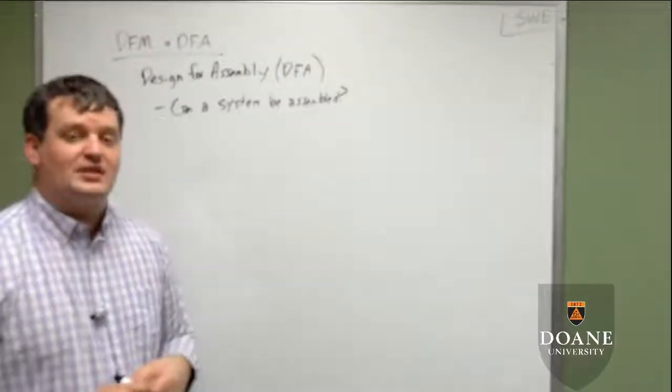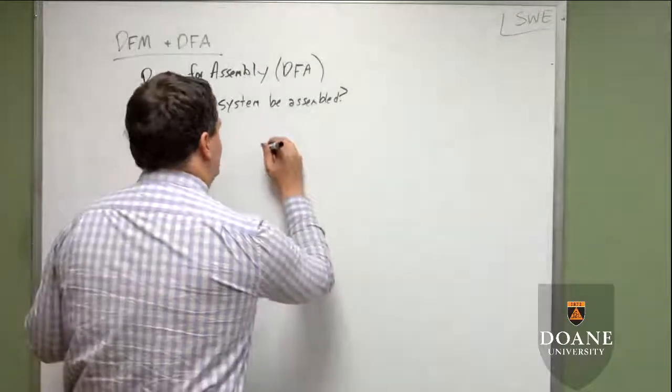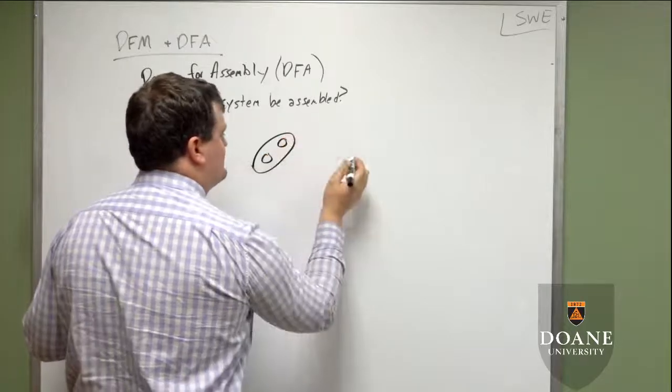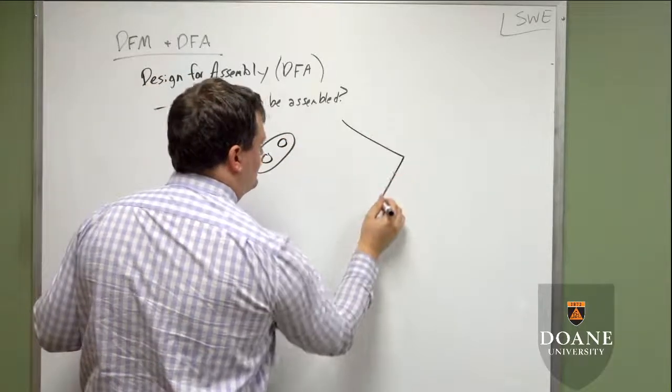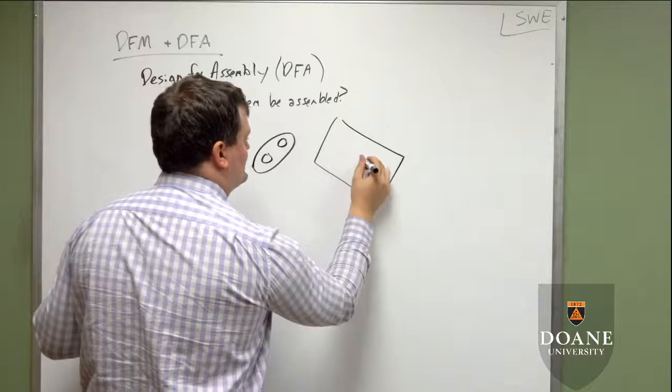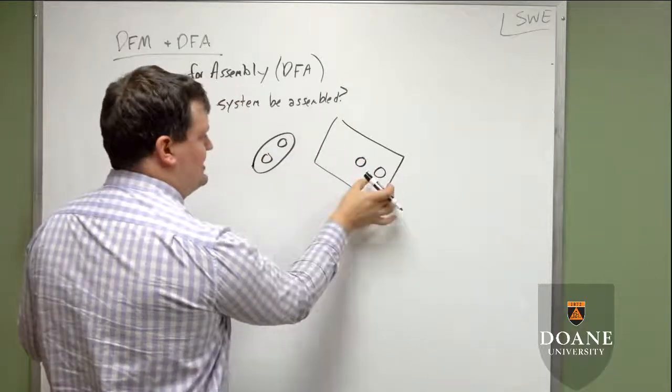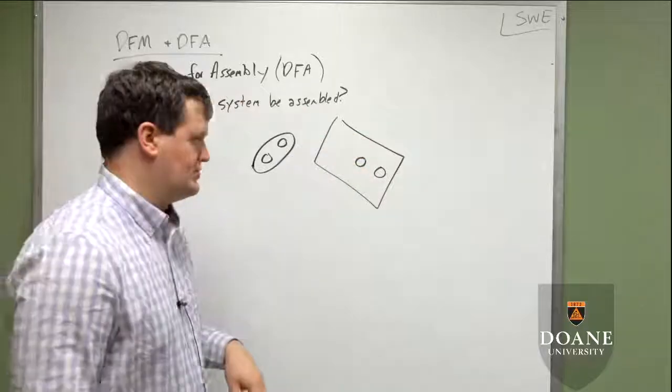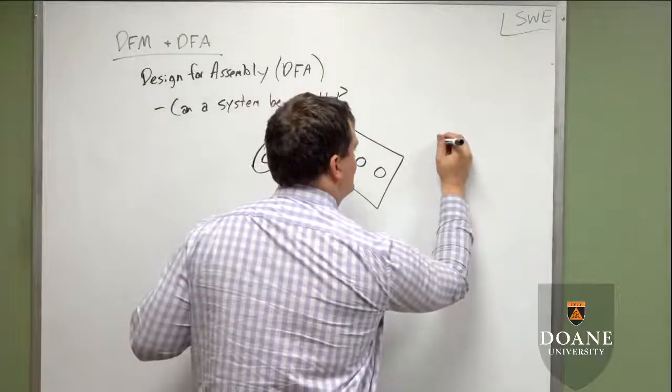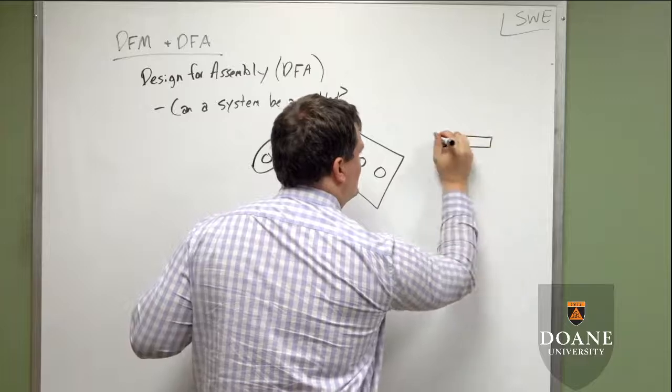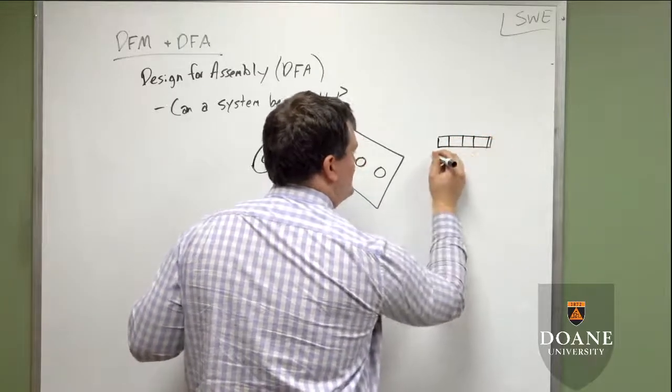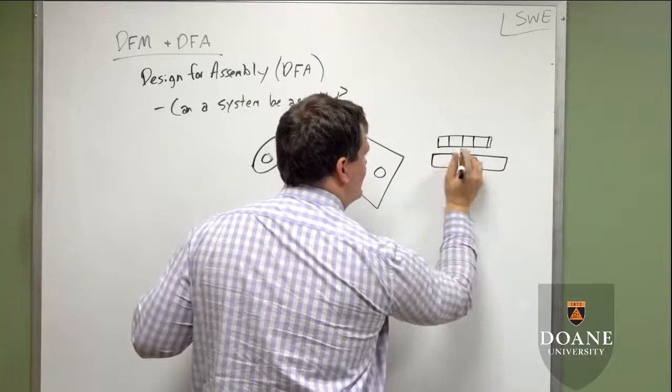A good engineer values their technicians because their technicians know this is dumb. Trying to insert a bolt into a hole like that? Nightmare. Yeah, that's like 1990s automobile technology right there. It sucks. So that's design for manufacture. Design for assembly is a very similar principle. The goal here with design for assembly, which is what DFA is, is can a system be assembled. If it can be assembled, you have satisfied DFA principles. Simply put.